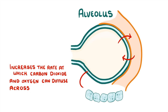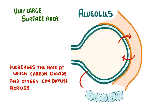Something that you can't see very well in this picture is that alveoli have a very large surface area. This is because instead of just having one, adults actually have hundreds of millions of alveoli, and if they were all spread out flat they would cover half a tennis court.